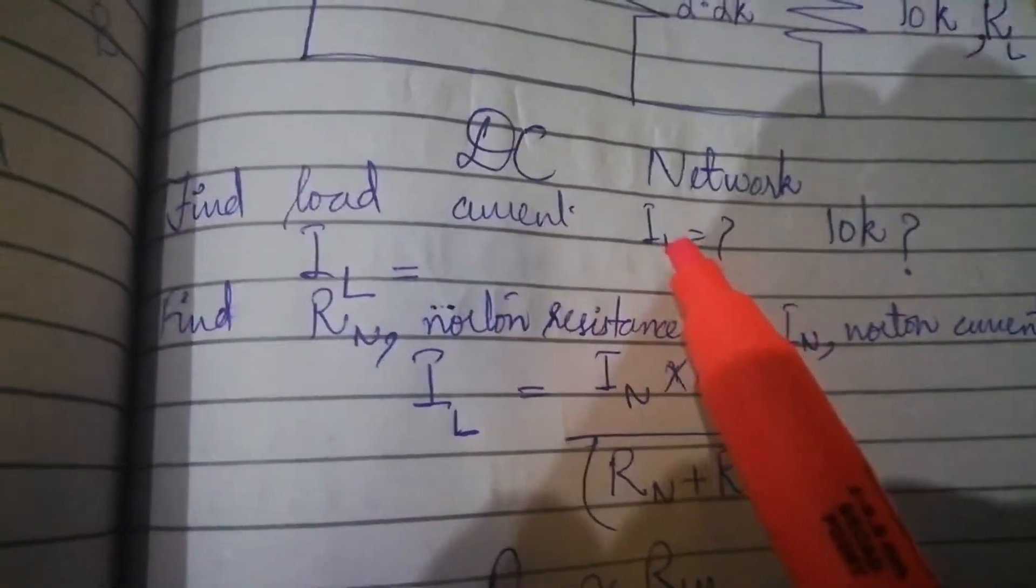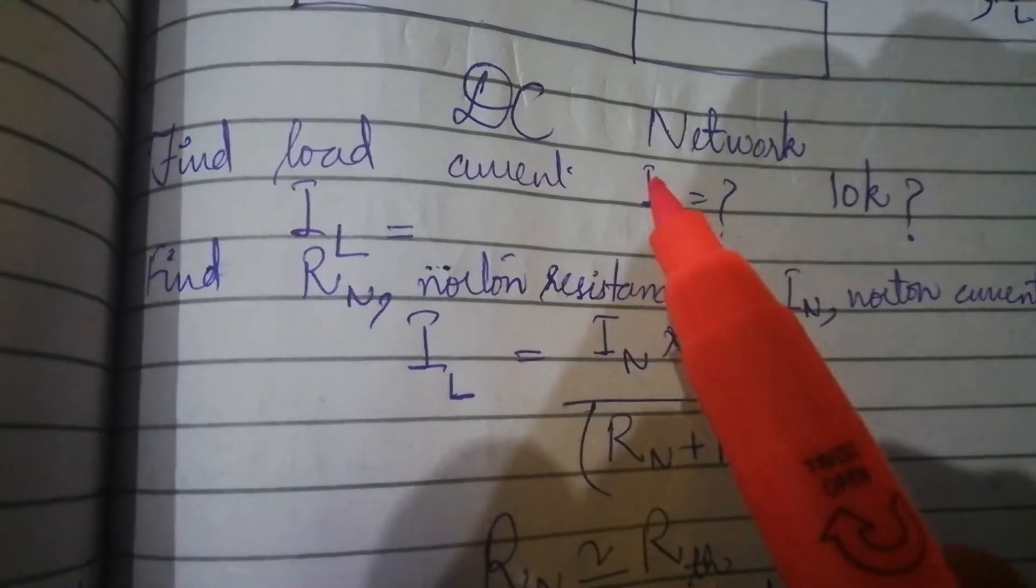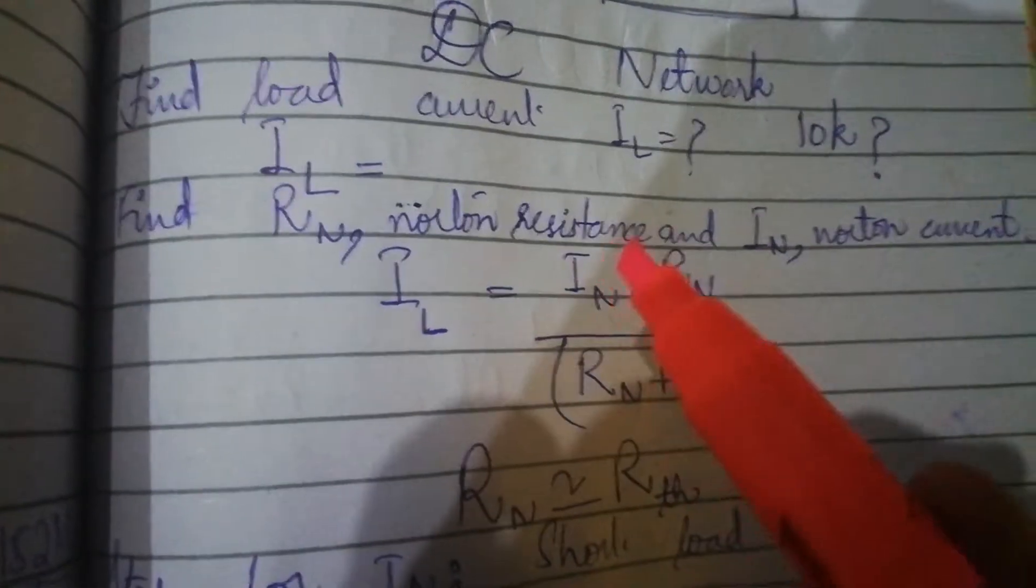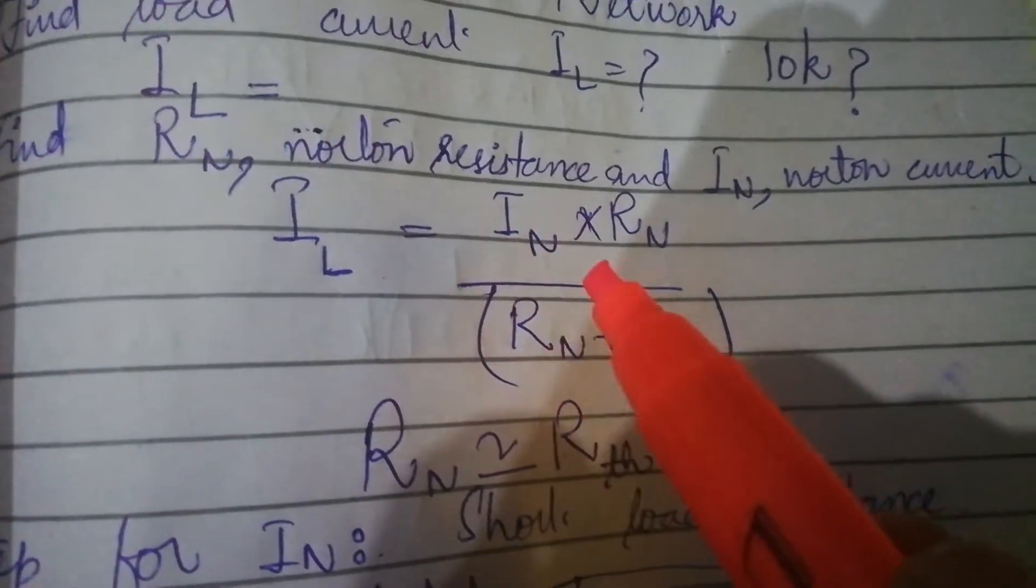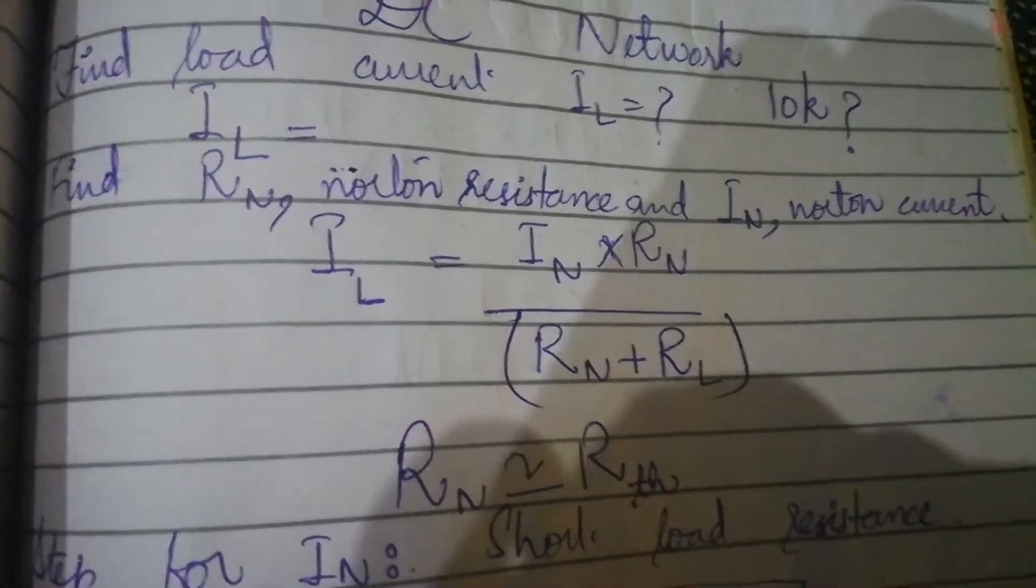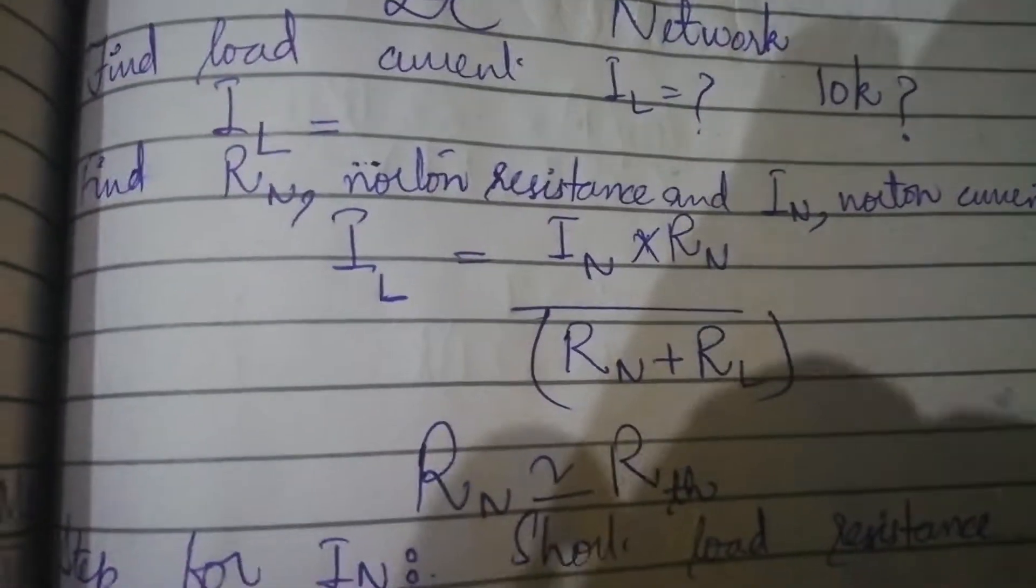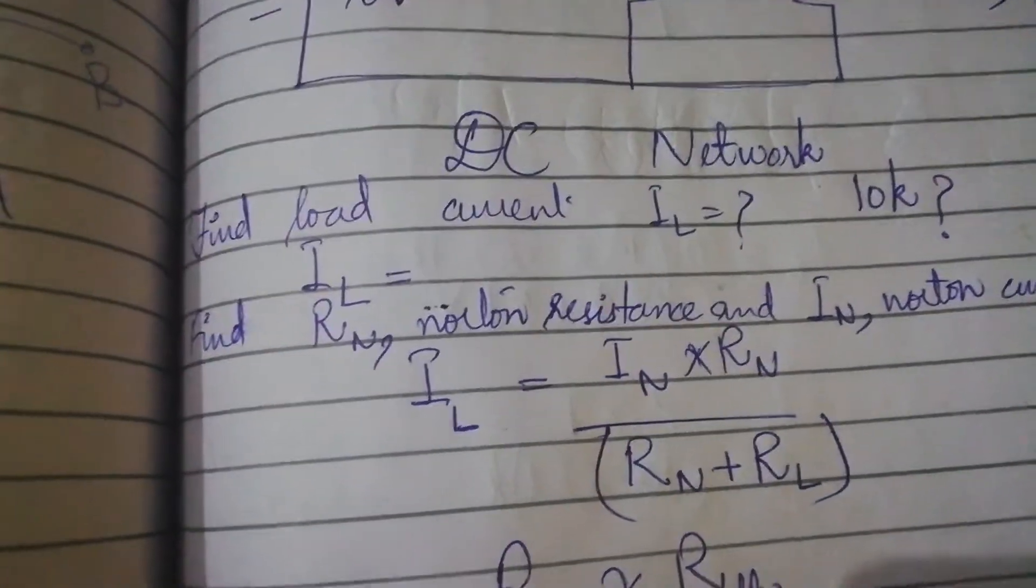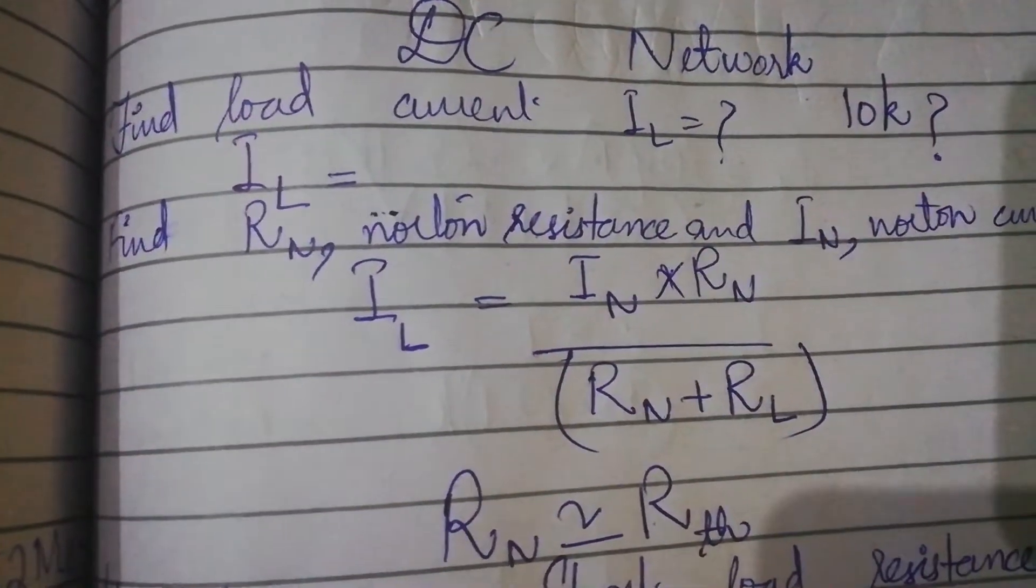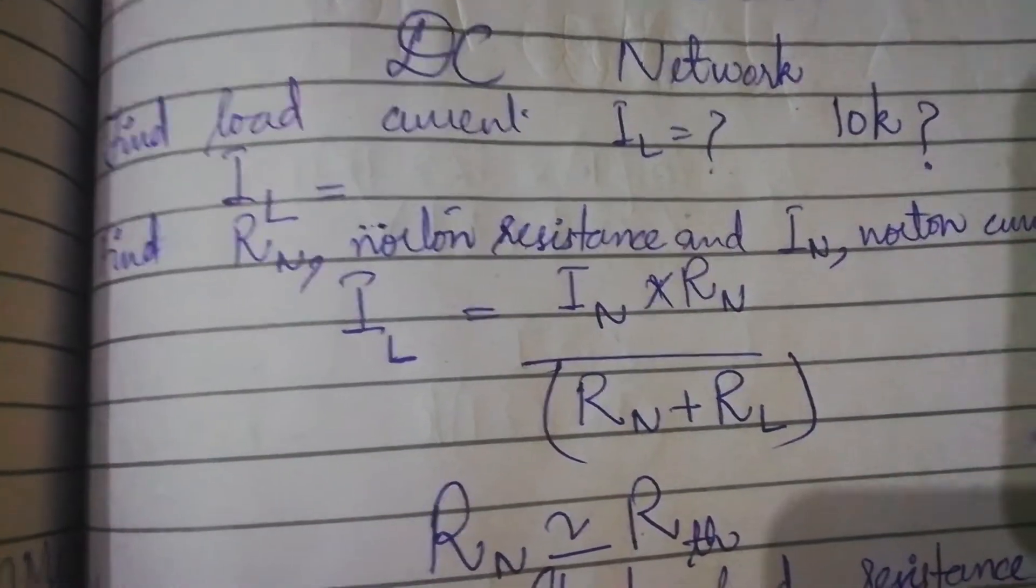In Norton's theorem, the load current formula is IN Norton current times Norton resistance divided by Norton resistance plus load resistance. This means you have to convert your circuit into an equivalent circuit of Norton current, Norton resistance, and load resistance.